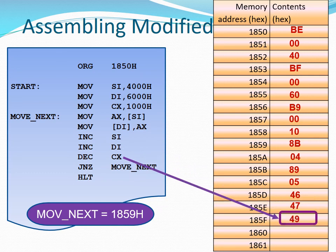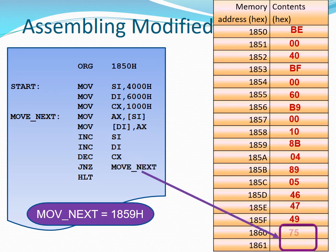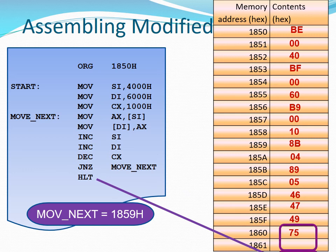The next instruction is a relative jump instruction — it is a 2-byte instruction going into addresses 1860 and 1861. At this point we don't have the offset; the offset is the one that goes into 1861. So we leave 1861 blank and fill in the first byte. We proceed to the next instruction, a single-byte instruction going into address 1862H. After going through the whole program, we go back to calculate our offset values.